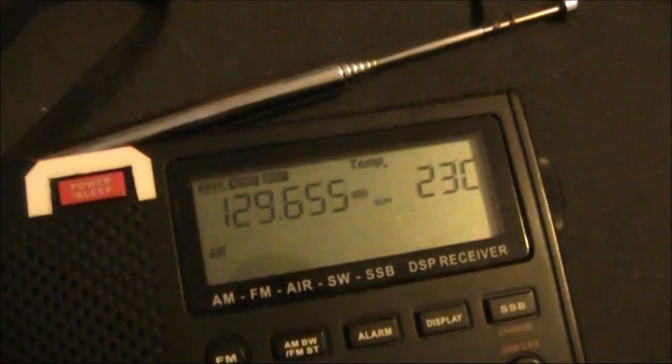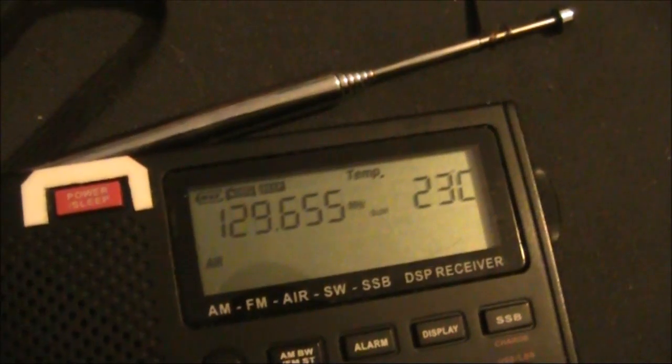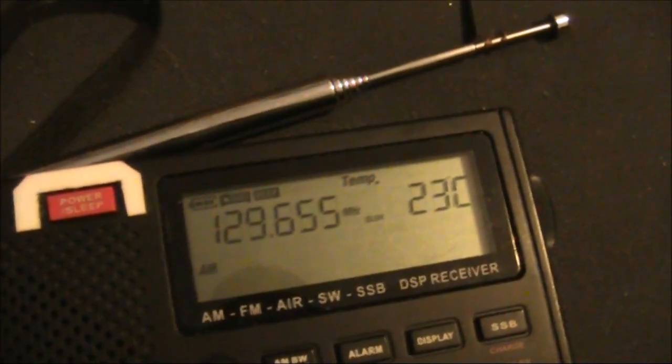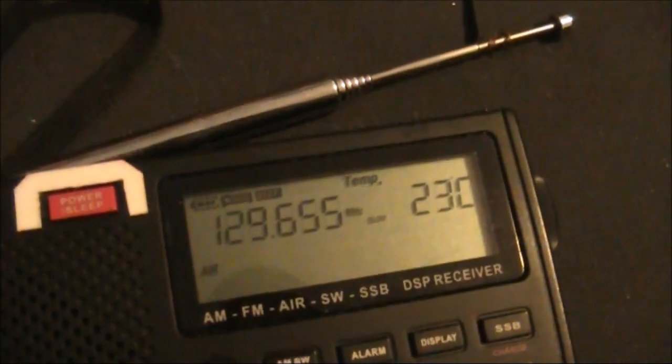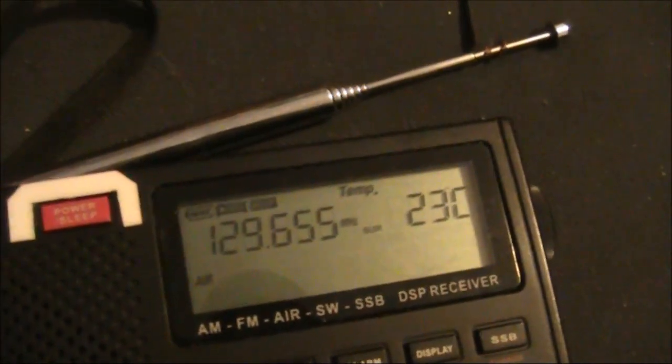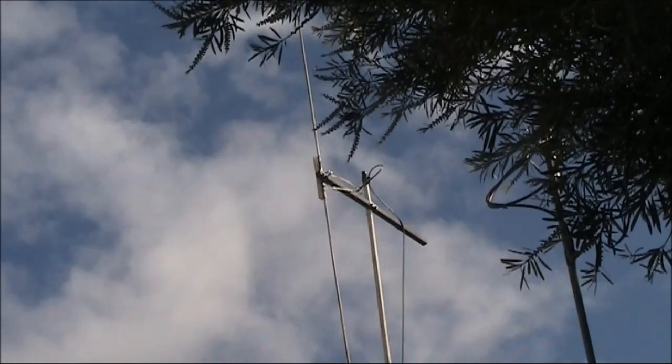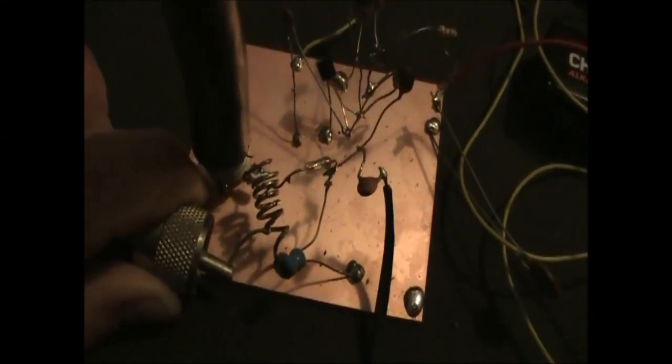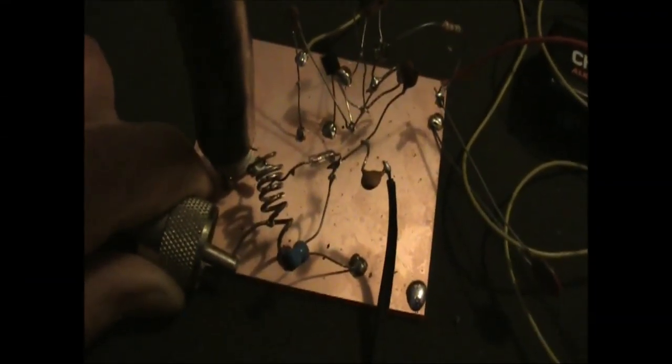The first signal I heard was a Morse practice beacon, transmitting on 145.650 MHz. Very useful for tests like this. The only connection I have between the converter and the receiver is a single wire going to the telescopic antenna.